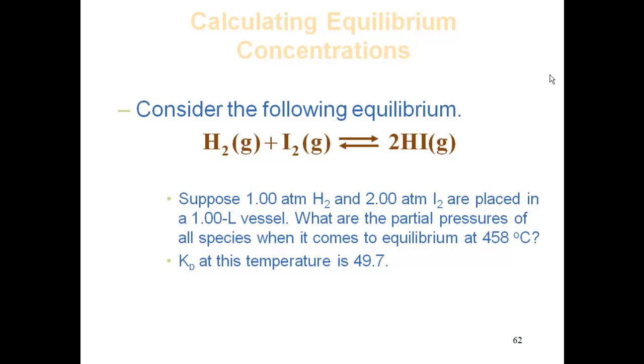Given this information, you've got 1 atmosphere and 2 atmospheres with no HI, so the reaction must be going to the right, consuming H2 and I2 and producing HI. Now notice it says there's a 1 liter vessel here. Being that we have partial pressures, that 1 liter does not mean anything to us in this problem. It's important to the experiment, but not important to the calculations.